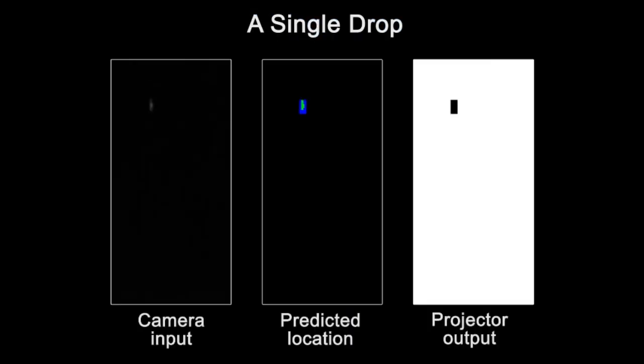This video shows how the system operates on a single drop. The camera input is fed into our system, which predicts the future location of the drop and directs the projector to not illuminate it.